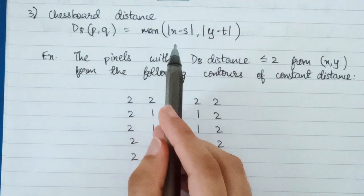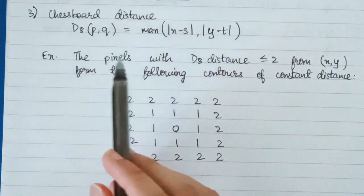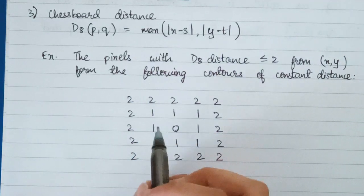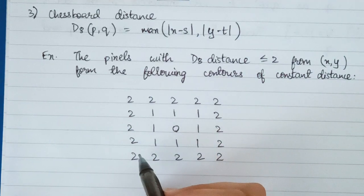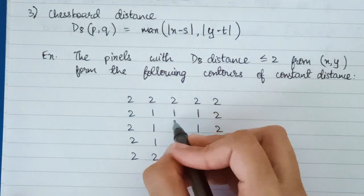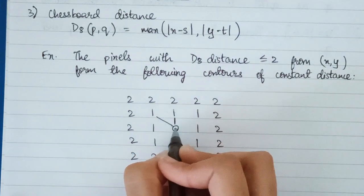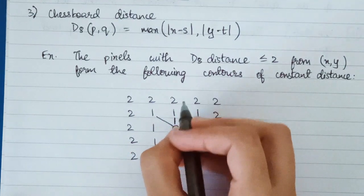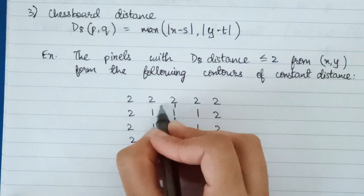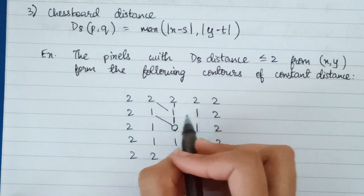Chessboard distance is similar to eight-adjacency or eight-way connectivity, which means while calculating the distance we can traverse horizontally, vertically, as well as diagonally. So if (x, y) is the center, to traverse to a diagonal point it can go directly — it does not have to go through the four-way path. To travel a distance of 2, it can traverse diagonally in two steps.